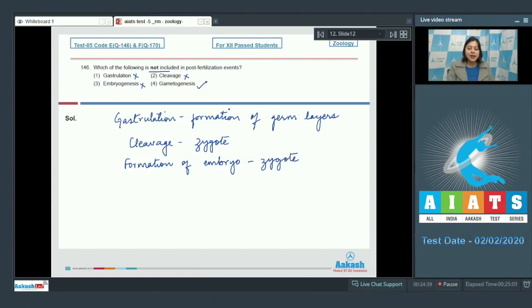Number 4. Gametogenesis is correct as gametogenesis is formation of gametes which occurs prior to fertilization. So, the correct answer becomes option number 4.